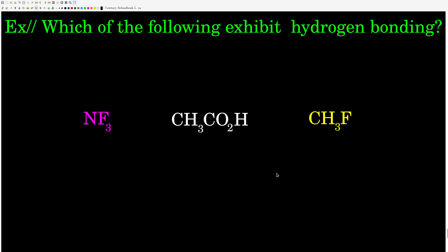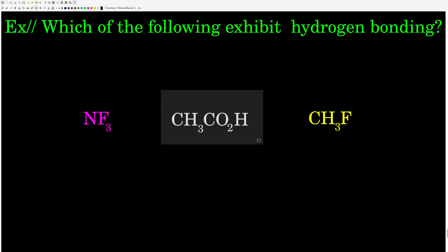Which of these molecules exhibit hydrogen bonding? While one has fluorine, it does not have a hydrogen anywhere, so no hydrogen bonding there. Acetic acid — if you draw out the Lewis structure, you'll see that a hydrogen is attached to one of the oxygens, so yes, it has hydrogen bonding. Fluoromethane has a fluorine and hydrogens, but none of the hydrogens are attached to the fluorine — the three hydrogens are on the carbon and the fluorine is on the carbon. No hydrogen bonding. The only one of these that exhibits hydrogen bonding is acetic acid. Thank you very much.